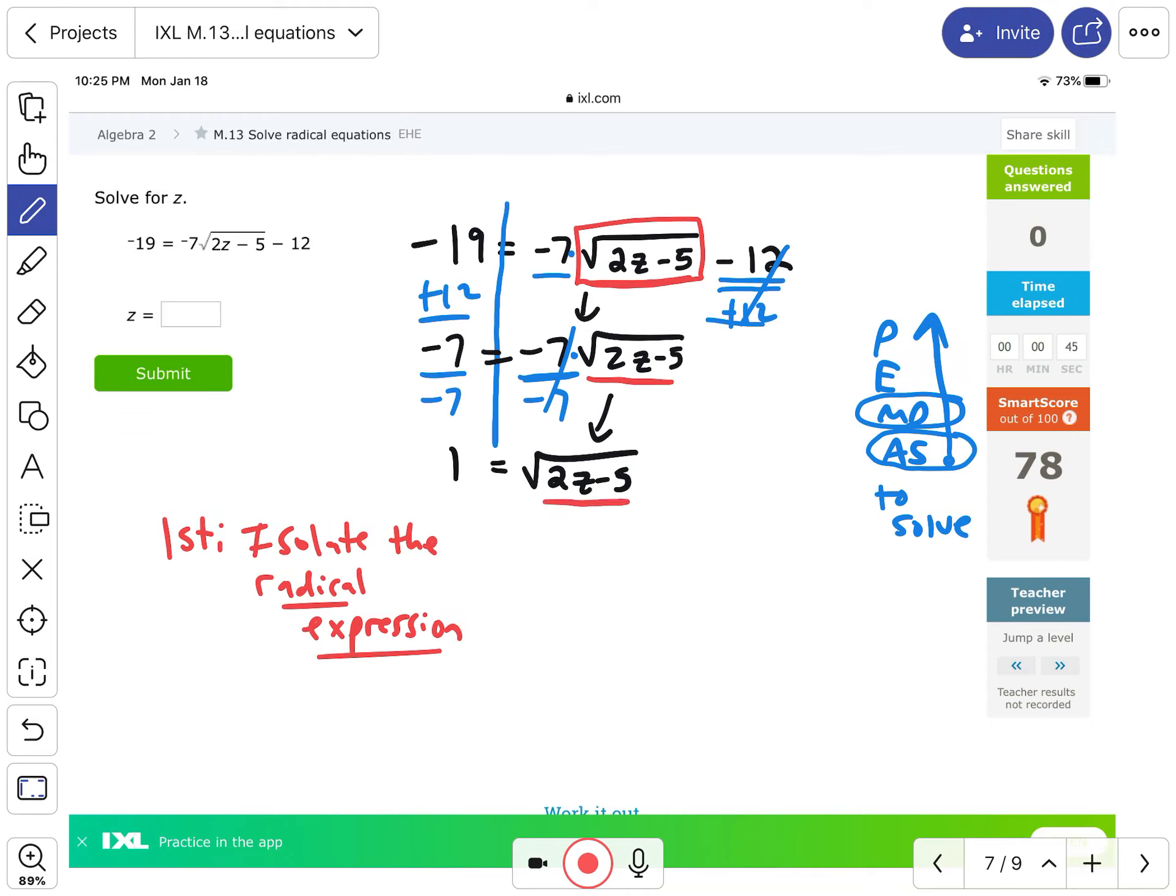Okay, so now we're ready. We have the radicand isolated, but more importantly we're here at the E because the square root and a square are inverses of each other at the level of E in PEMDAS. So I'm going to square both sides - that's the inverse on the right side - so we could cancel both out, and now we're left with 2z minus 5, and 1 squared is just 1.